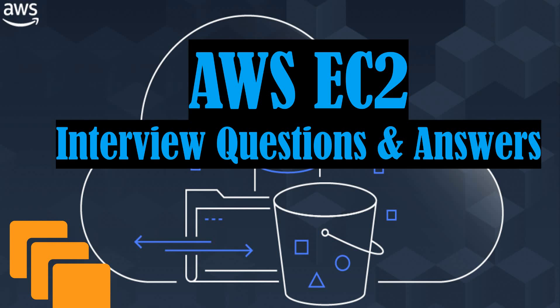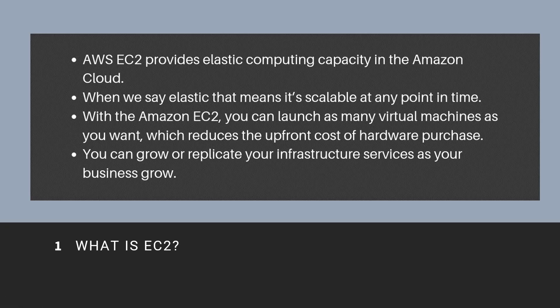AWS interview questions and answers. What is EC2? Amazon EC2, or Elastic Compute Cloud, is a web service which provides resizable compute capacity in the AWS cloud. It is scalable at any point of time — you can launch as many virtual machines as you want, which reduces the upfront cost of hardware purchase. You can replicate your infrastructure services as your business grows.